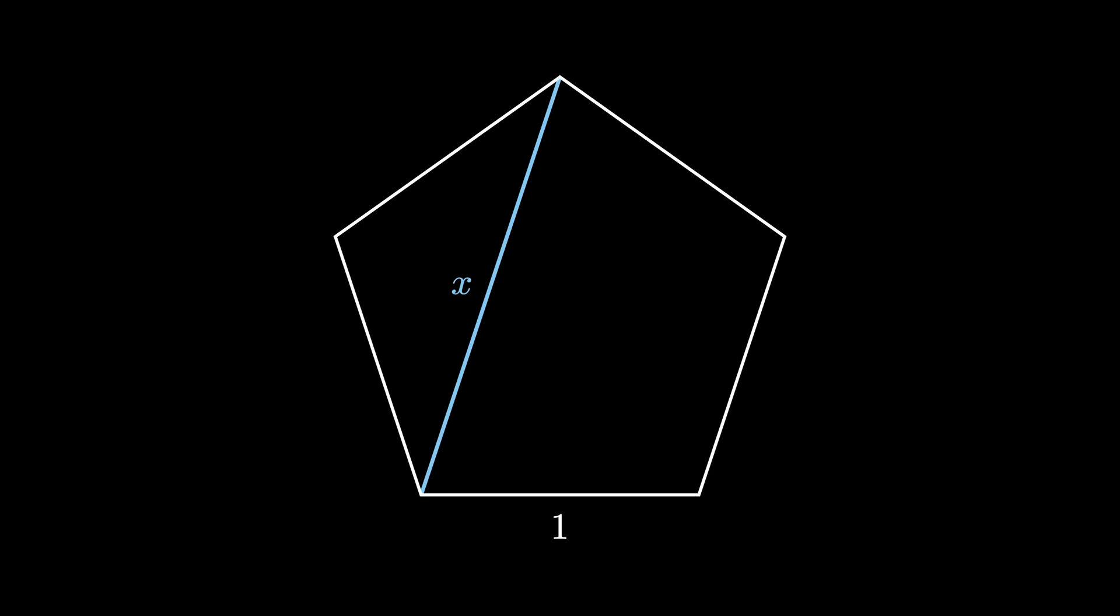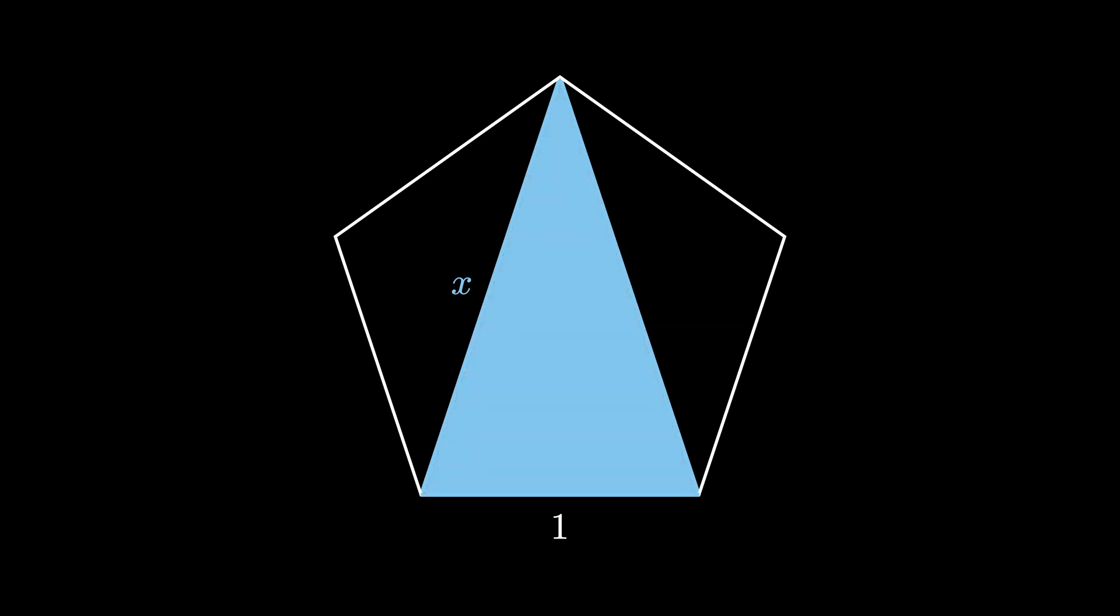First, we draw a second diagonal line like this, which creates this shaded isosceles triangle. When we draw another diagonal like this, we create a second triangle shaded in red that's a sub-triangle of the blue triangle.